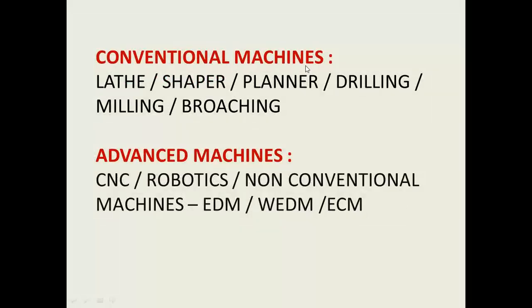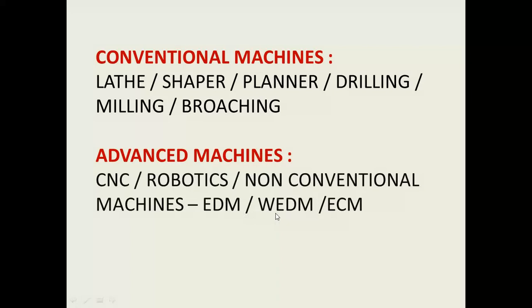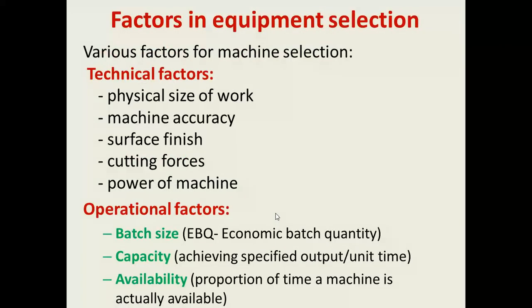Conventional machines used in production include the lathe, shaper, planer, drilling, milling, and broaching machines. Advanced machines include CNC and robotics. Non-conventional machines include EDM and wire EDM. These are all the machines used in production.